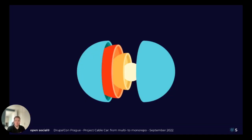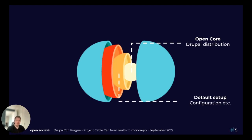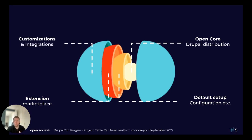You can see our open core and SaaS model as a layered sphere. At its core, we have the Drupal distribution — everybody gets this, it's always there. On top of that, we have a default setup: configuration, modules, permissions, etc. There's an extra layer that all of our customers get. Then the next layer is the extensions marketplace, for customers to enhance the default product and tailor the community to their needs. And last but not least, we also do customizations and integrations — giving you OpenSocial's flexible, customizable offering.